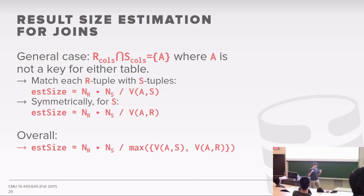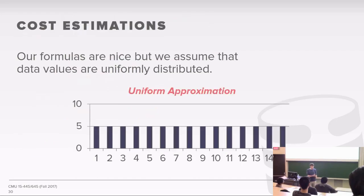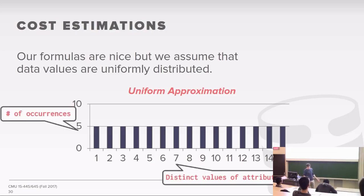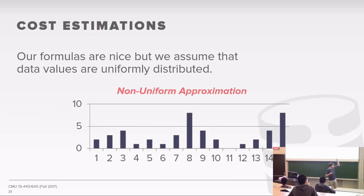The system builds histograms to come up with these numbers — you look at your histograms, figure out the values, and apply the formulas. But all these formulas work out nicely only when we assume values are uniformly distributed. Real data usually looks skewed. And if we have to maintain a histogram for every single distinct value — say a table with a billion rows and half a billion distinct values — that would be super expensive. So instead, people use buckets to combine different values in the histogram, maintaining only the count for all values in a given bucket.